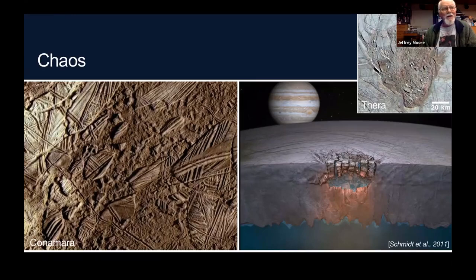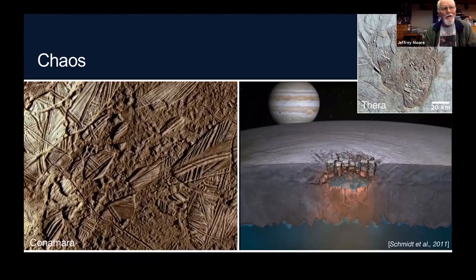Europa Clipper will look very closely at these younger, currently active chaos-forming regions to examine material extruded to the surface, determine chemical composition and other parameters, and hopefully identify a potential landing site for a future Europa lander targeting sites identified by Europa Clipper itself.